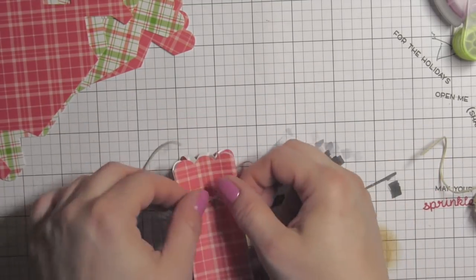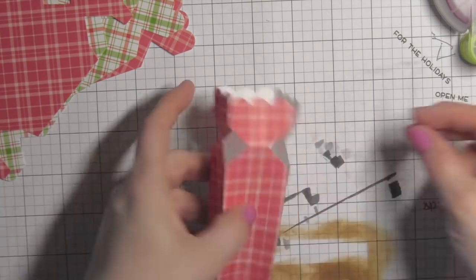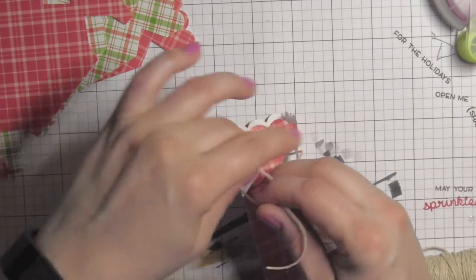I'm going to go ahead and tie that in a little bow. I'm going to leave the ends long until I get it exactly the way I want it to look, and then I'll trim them all at the end.